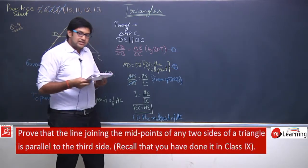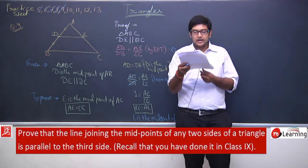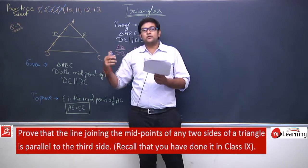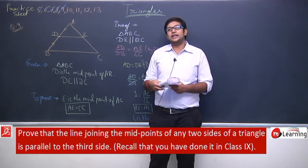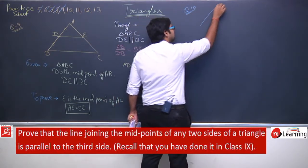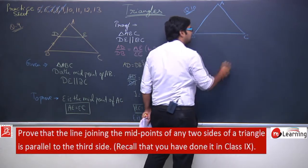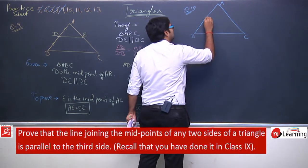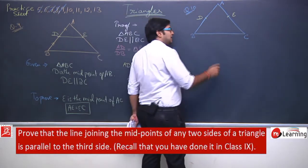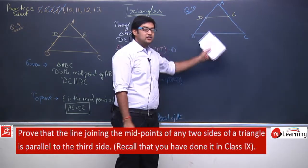Question number 10: Prove that the line joining the midpoints of any two sides of a triangle is parallel to the third side. This is just the reverse of question 9. Let us draw the diagram: triangle ABC, where D and E are the midpoints of two sides. We need to show DE is parallel to BC.